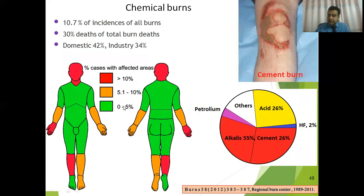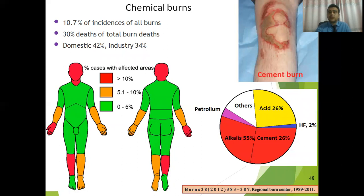This picture portrays one example of cement burns. If we categorize the total types of burns, acid burns are 26% of all chemical burns, and HF burns are 55% of the total. Next are petroleum burns. Acids and bases — especially acids — are the main reasons of chemical burns, and it is very painful. So be very careful when you are using acids.